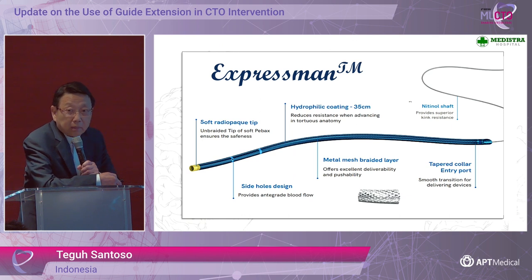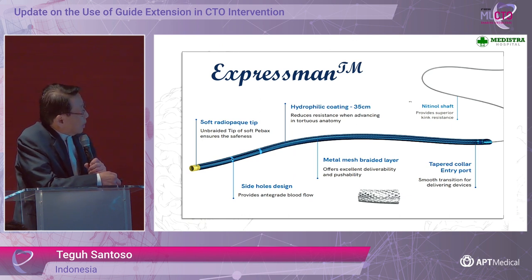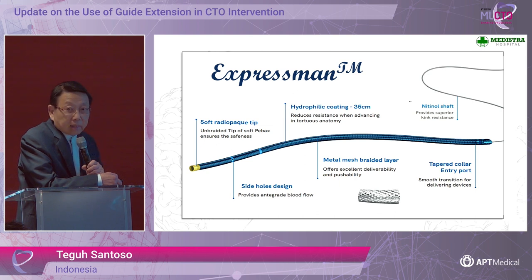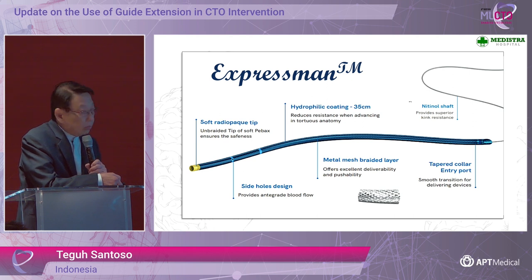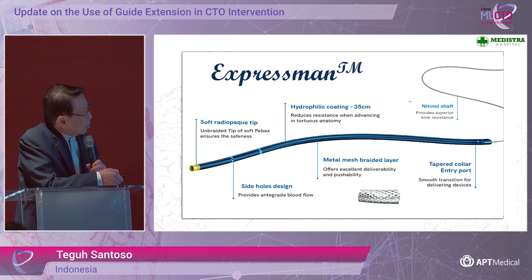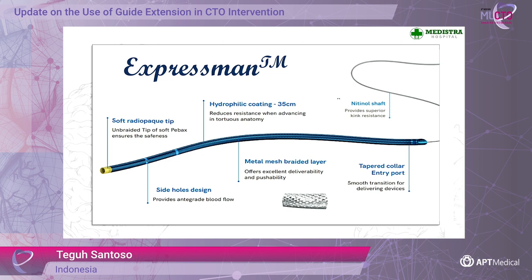In more detail about the features of Expressman: the tip is unbridled and relatively atraumatic. It has four side holes that provide adequate blood flow and minimize ischemia. It is hydrophilic coated, which reduces resistance while advancing in tortuous anatomy, and pushability is excellent. It also provides kink resistance, and the tapered collar entry port allows smooth transition when delivering our gear.